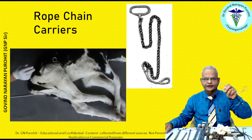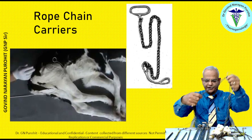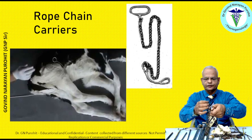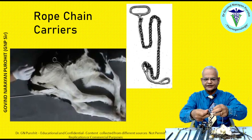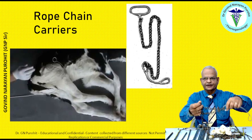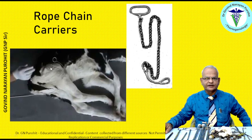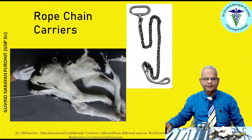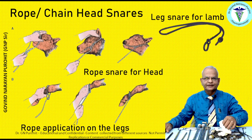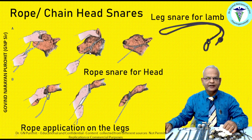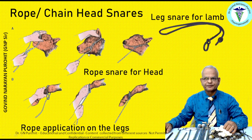Rope carriers can also be used for carrying a chain inside so you can place the chain at the appropriate place and pull the fetus. As you can see in the picture, this rope carrier is passed around the fetal leg and then pulled back to pull the leg. When applying ropes on the head, it is advisable to apply it between the lips and behind the ears — if you apply it on the lower lip, that may break and cause injury to the live fetus.